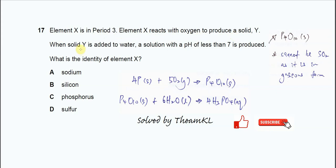When the solid Y is added to water, a solution of pH less than 7 is produced. So we know that this solid oxide must be phosphorus oxide, because if it's silicon dioxide, it cannot really dissolve in water, so the pH will be 7.